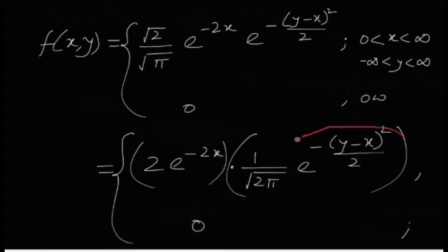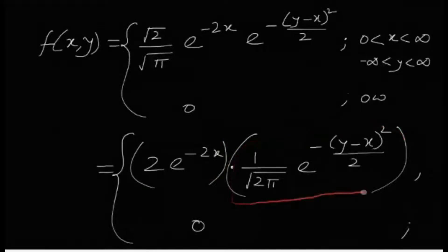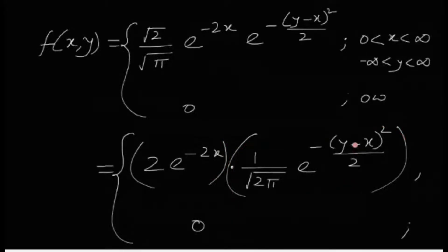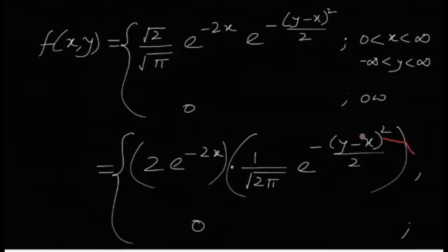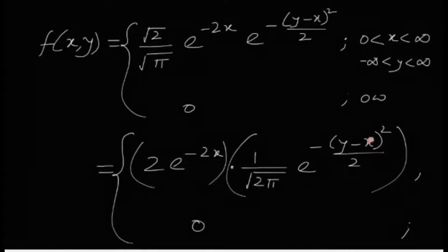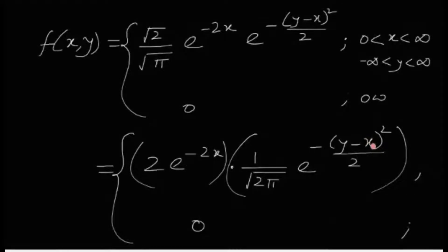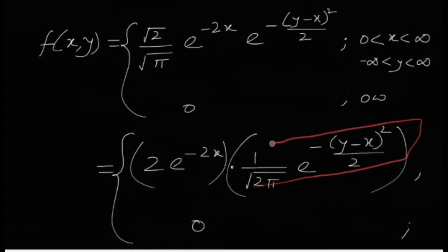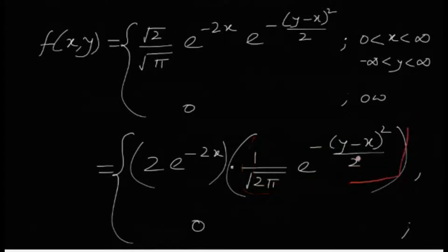Again, for this part, see, this is 1 by root 2 pi times e to the minus (y minus x) squared divided by 2. Now this part obviously looks like normal, but here, a part where x is here. If we consider x to be the mean, then this part is actually the distribution of a normal distribution with mean x and standard deviation 1. If you consider this, the standard deviation is 1, sigma is 1, and mean is x, but x is a random variable. It's not a constant.